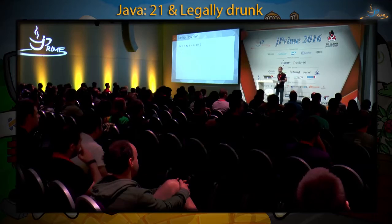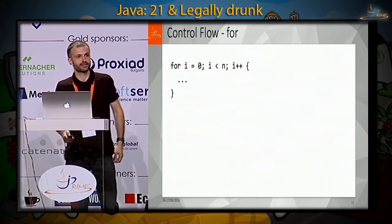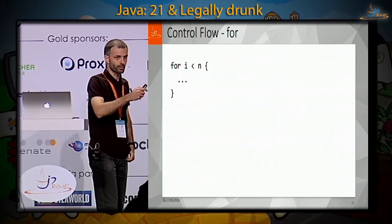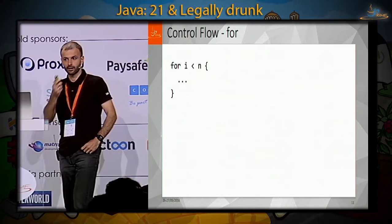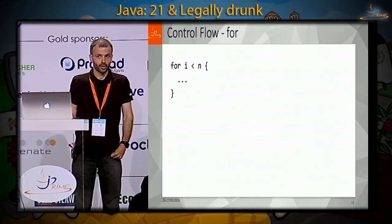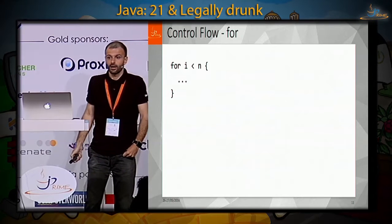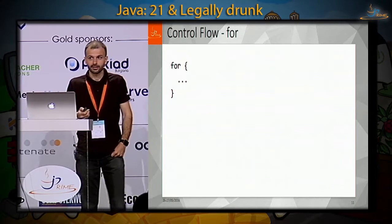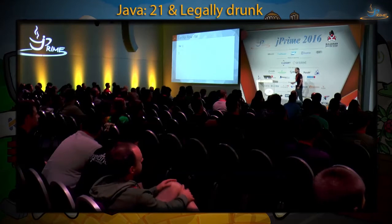Now let's look at control flow. The basic for loop is the same as you might expect, except there are no parentheses. Similarly to other languages, we can skip the first or last or both parts, which converts for into a while loop. For this reason, there is no while loop in Go — it's simply not needed. You can also skip all three parts, and that gives you an infinite loop.